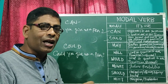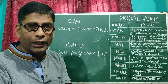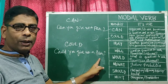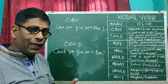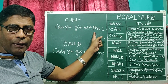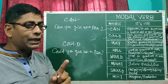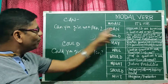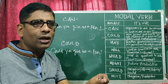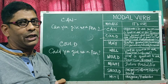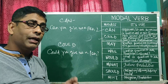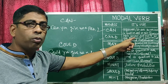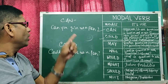But if the same question I want to ask to your father, to your mother, at that time I need more formal and polite language. So the same question becomes: could you give me a pen. I use can for informal situations — asking students or younger people where you need not show formality. But where you have to show formality, when you ask questions to your elders or your teachers, at that time you use: could you give me a pen.